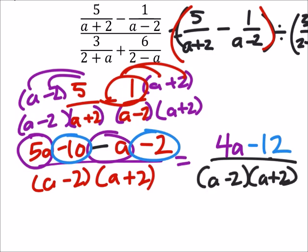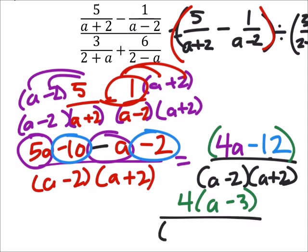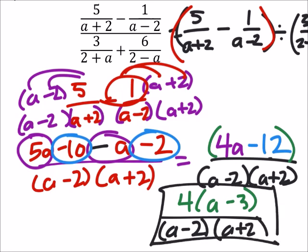In this numerator we can factor out a 4 from both of those terms, so that leaves us with an a minus 3. Doesn't look like anything cancels out here, but that's okay, still our final answer. That's just for that red part right there. So I'll replace that later. Let's look at that second part now.